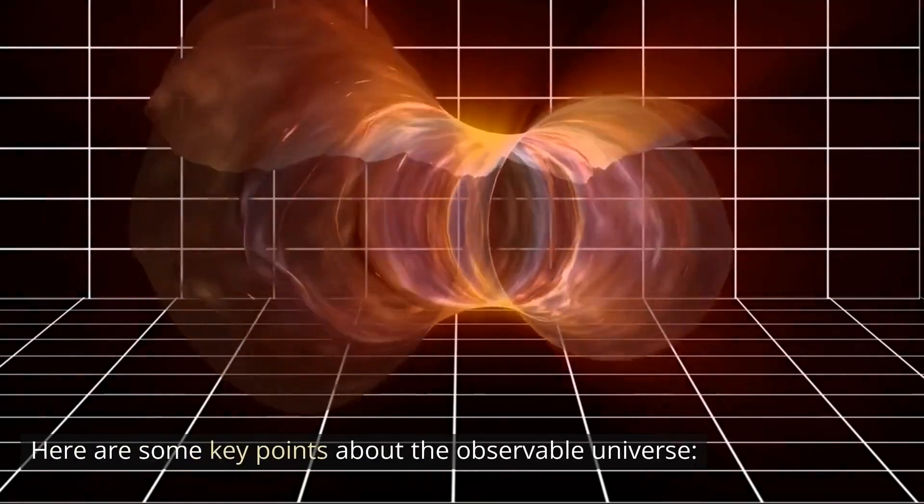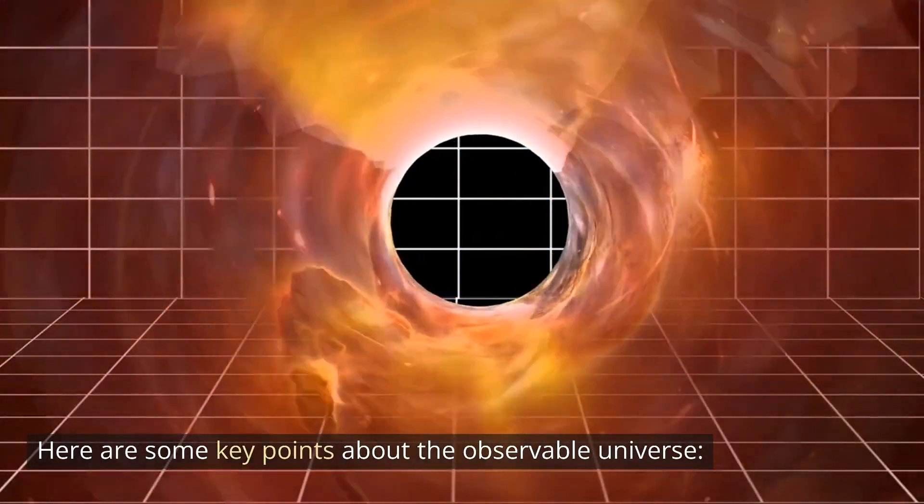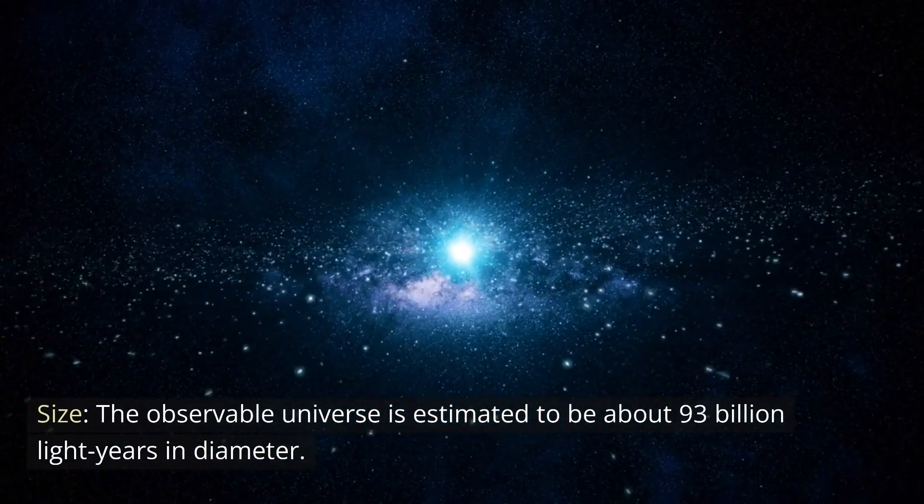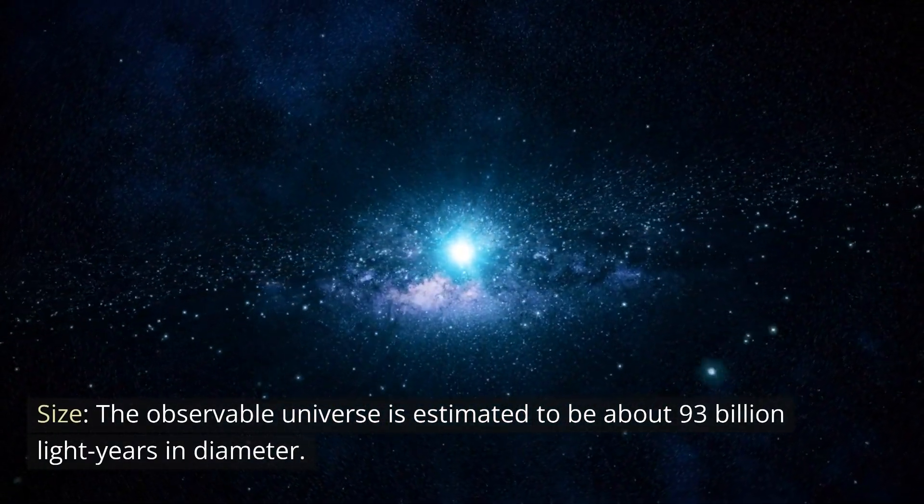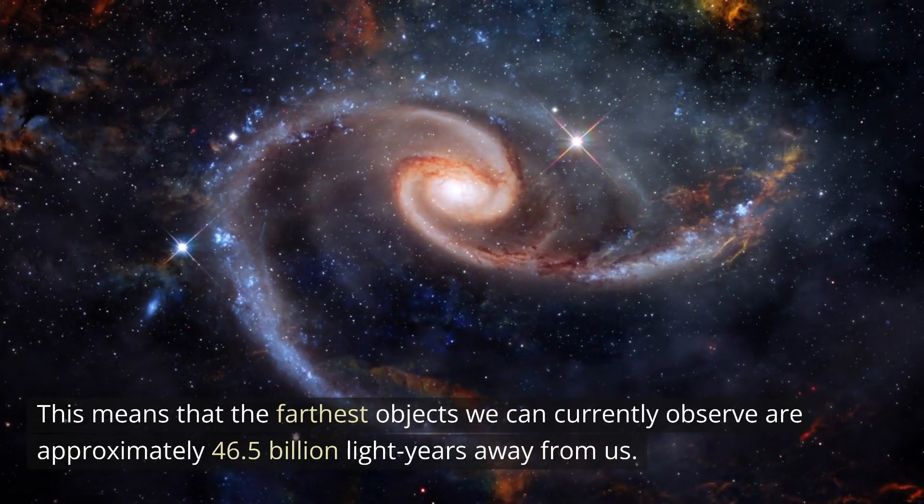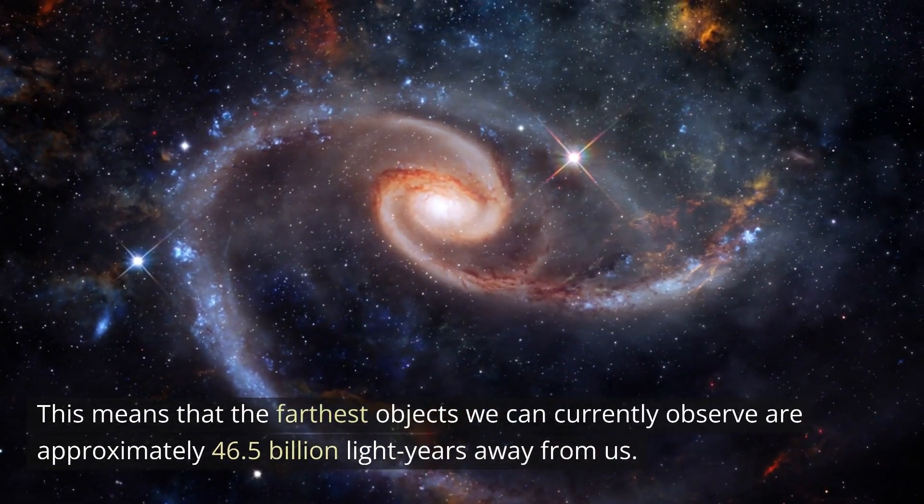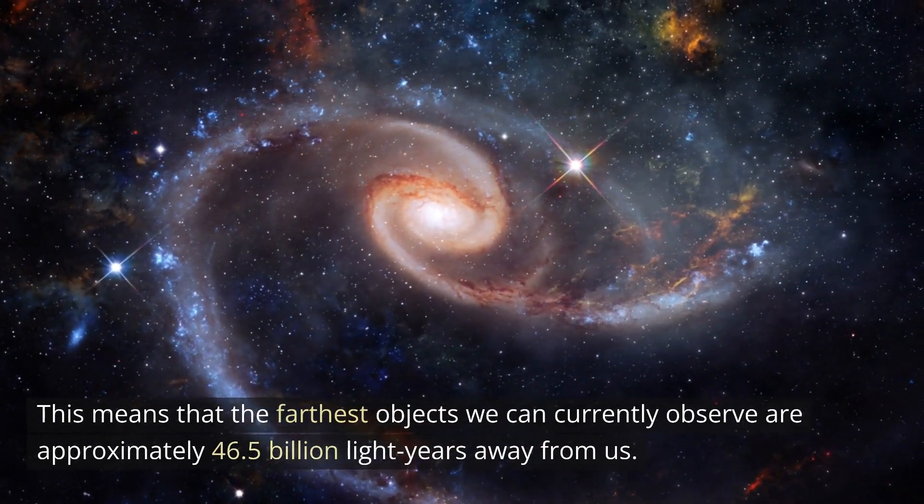Here are some key points about the observable universe. Size: The observable universe is estimated to be about 93 billion light-years in diameter. This means that the farthest objects we can currently observe are approximately 46.5 billion light-years away from us.